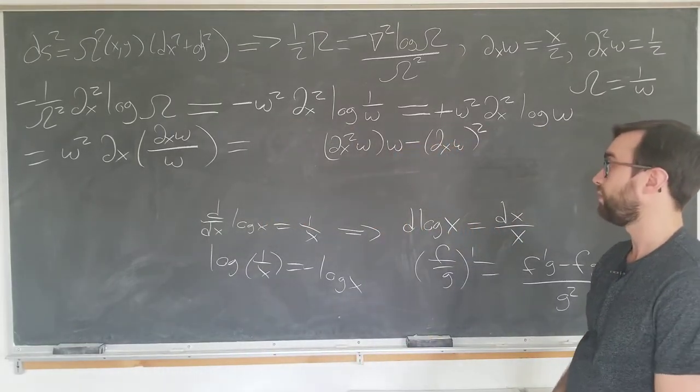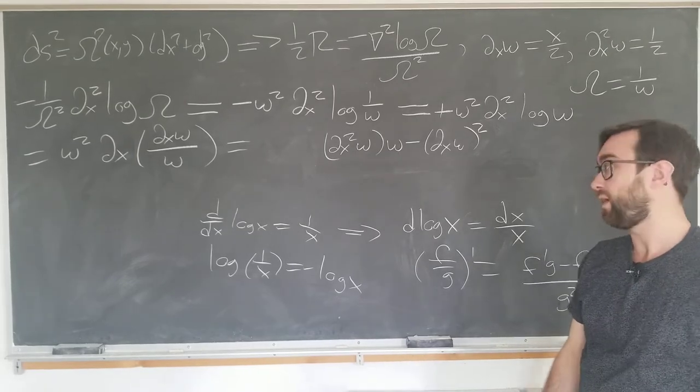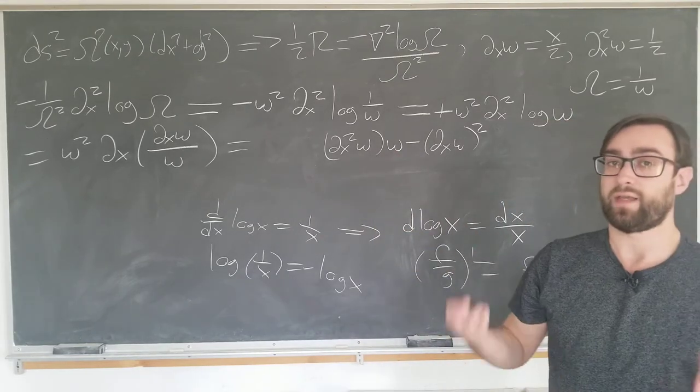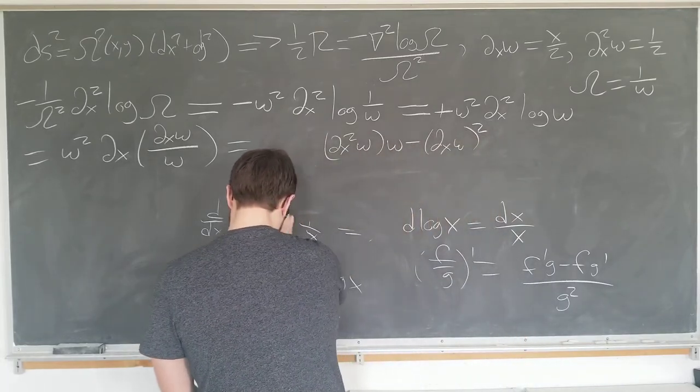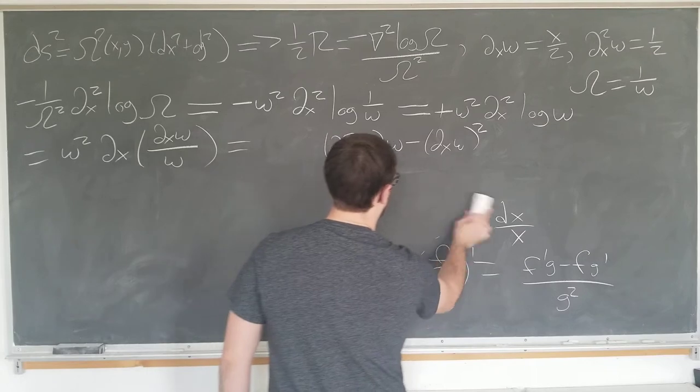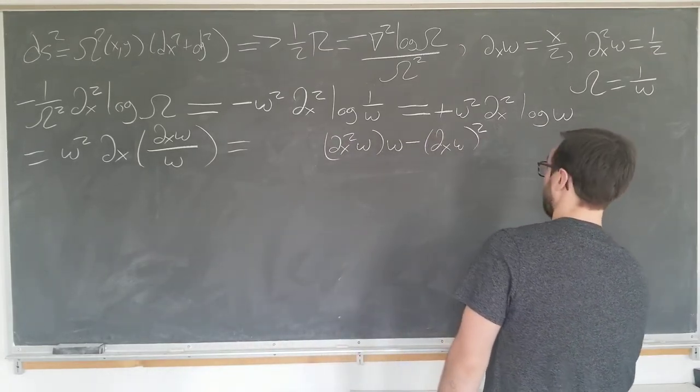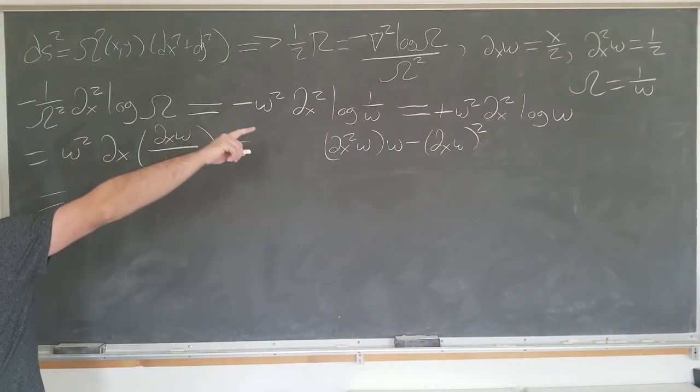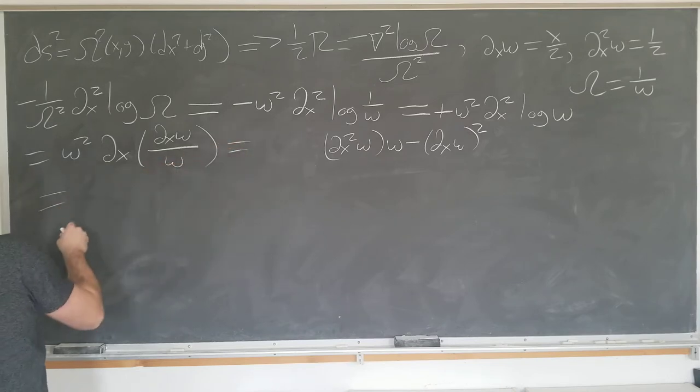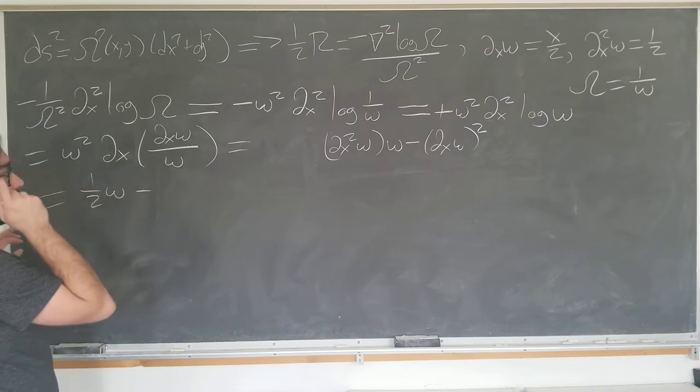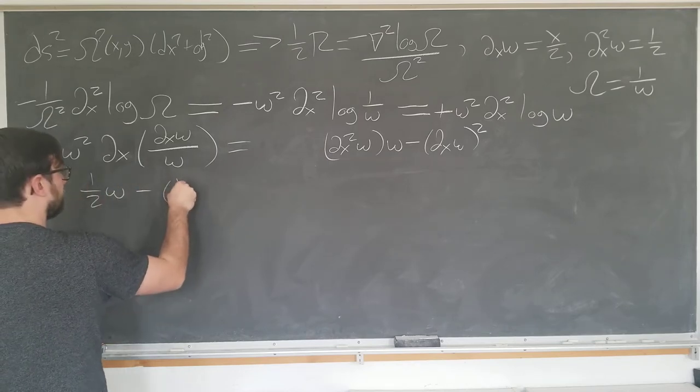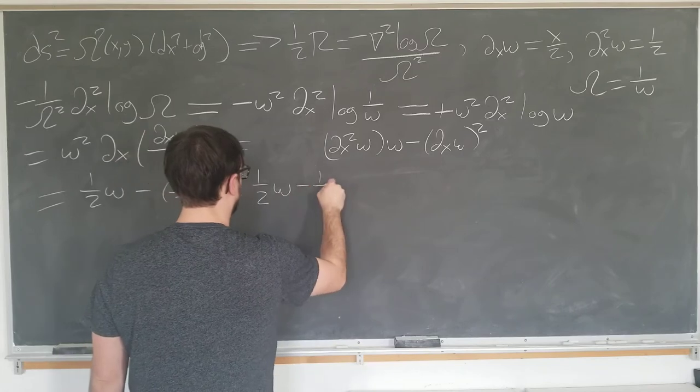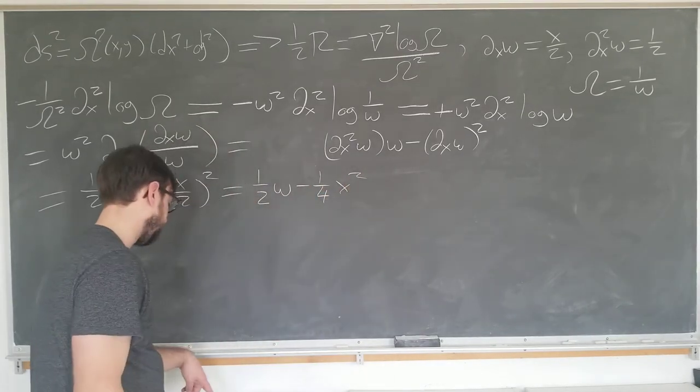Don't need the omegas anymore, and this is as far as we can go without incorporating the y components as well. So we have the x component of the Laplacian being this. All we have to do is add the y component and we're done. Actually before I proceed I will evaluate this in terms of x's and y's. dx squared of omega, well that's just one half. Minus dx of omega squared, well that's just x over two squared. Just gonna be one half omega minus one fourth x squared.